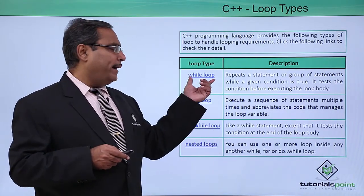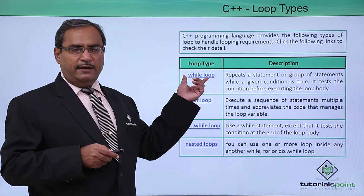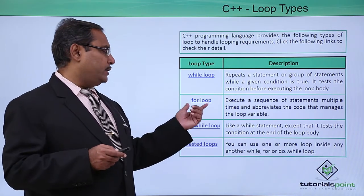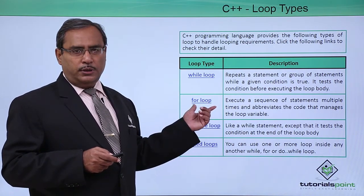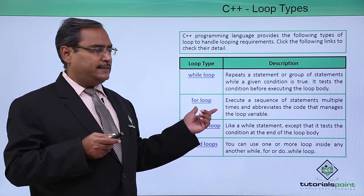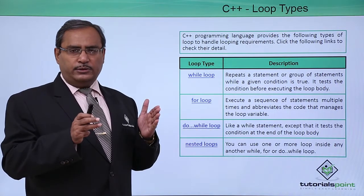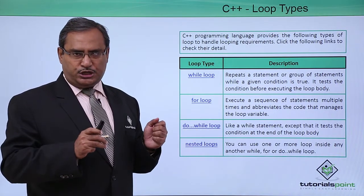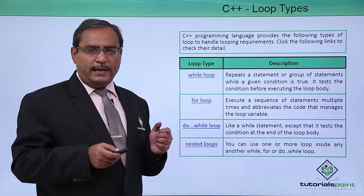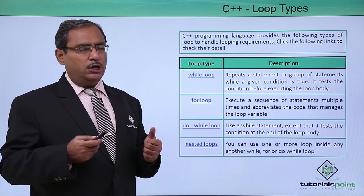The first one is the while loop. In the case of a while loop, we put the condition, and if the condition is true then the body of the while loop will get executed. Then we have the for loop — for a specified number of times the loop will get executed. Then we have do-while: the body will be executed first, then the condition is checked; if the condition is true again, the body will be executed next. If the condition is false, it will exit from the loop control.